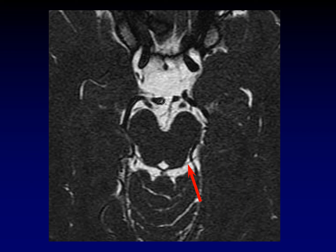Every once in a while you can actually see the trochlear nerve traversing from the dorsal brain stem to tuck into the dural sheath along the medial aspect of the temporal lobe, from which it will emerge again to enter the cavernous sinus. Be careful, though — I more frequently see arterial and venous structures in this location than the trochlear nerve itself, so make sure you're not just looking at a vessel.